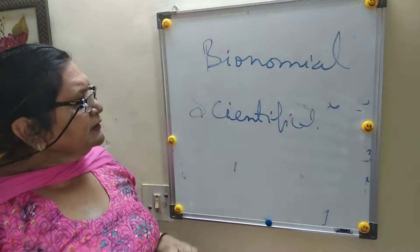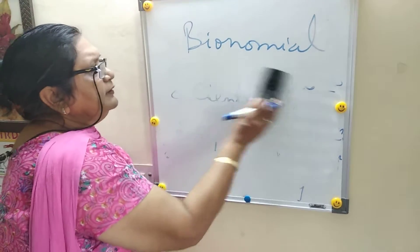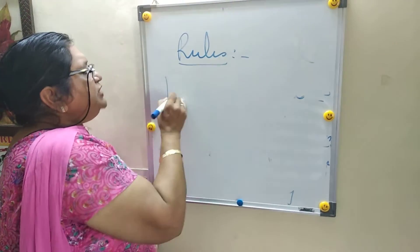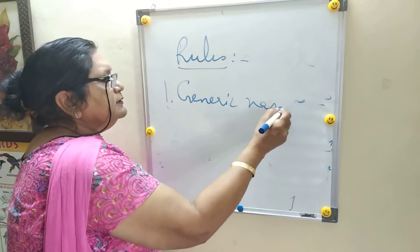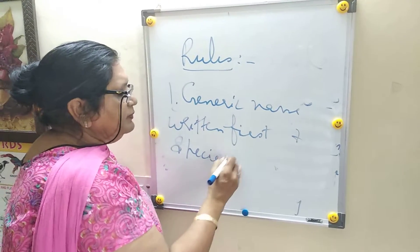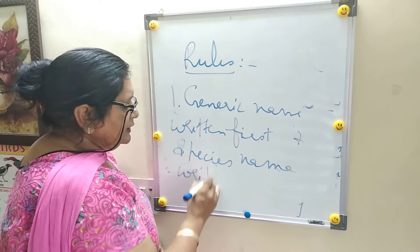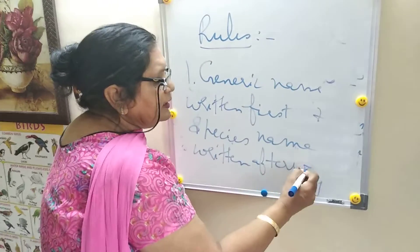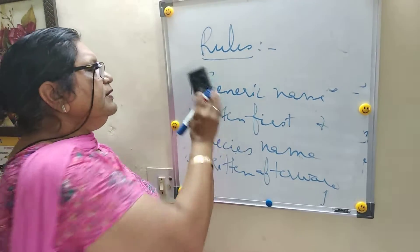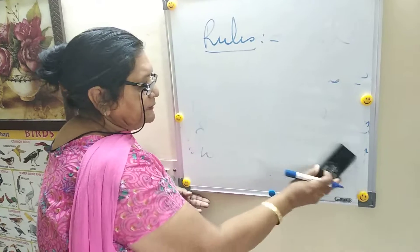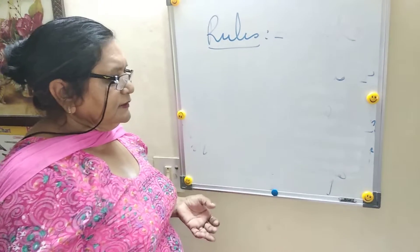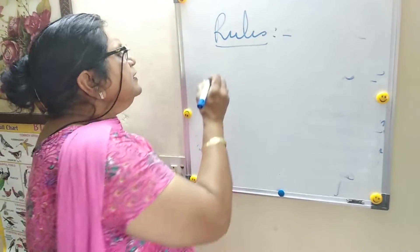Now, the rules of nomenclature — important for two marks in the board exam. First rule: the generic name is written first, and the specific or species name is written afterward. Second rule: the generic name always starts with a capital letter, and the species name starts with a small letter. For example, mango — as given in NCRT — is Mangifera indica; for human beings it is Homo sapiens.